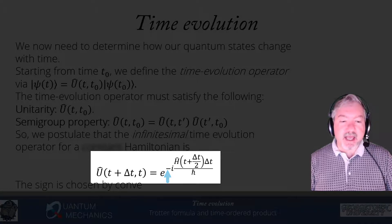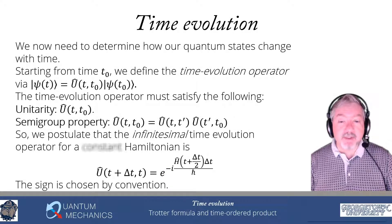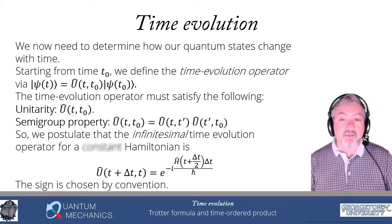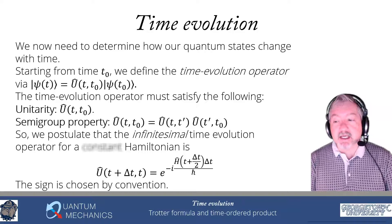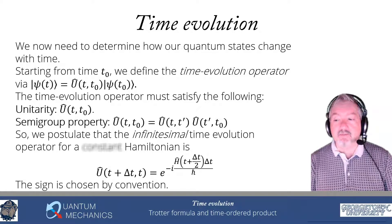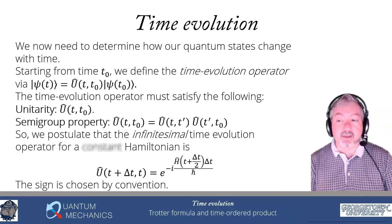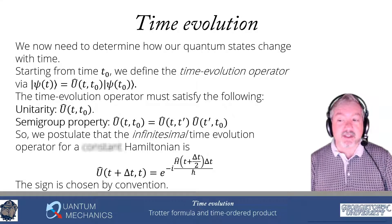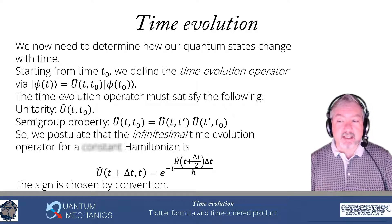The minus sign is chosen by convention. All the properties would be satisfied with a plus sign, but with the minus sign, a plane wave or free particle with momentum p moves in the positive direction. If we picked the plus sign, that free particle would move in the direction of minus p, which would be inconvenient and confusing. So we pick the minus sign by convention, and this agrees with classical mechanics results like harmonic oscillators oscillating as a function of time.